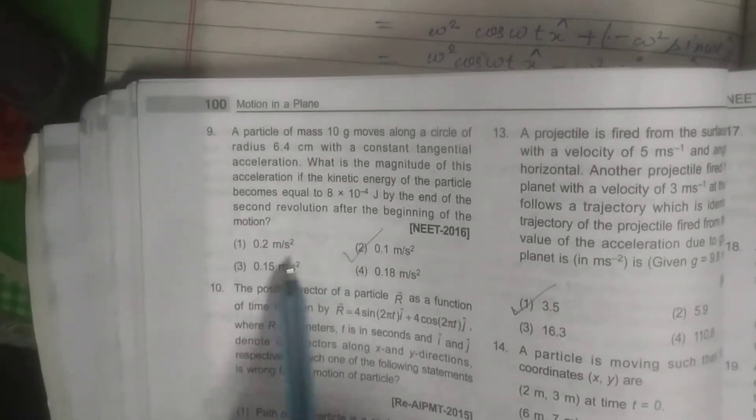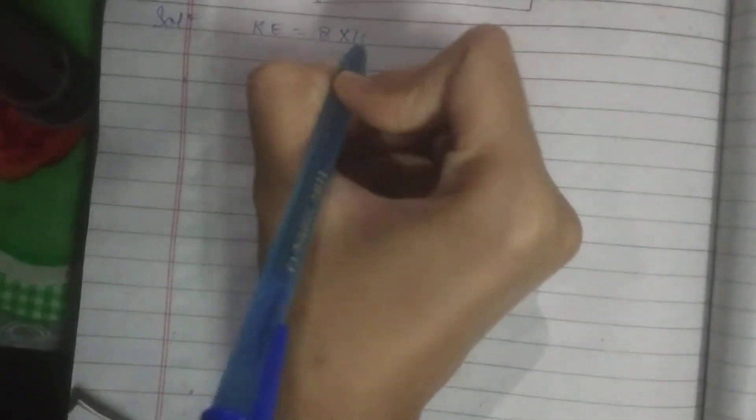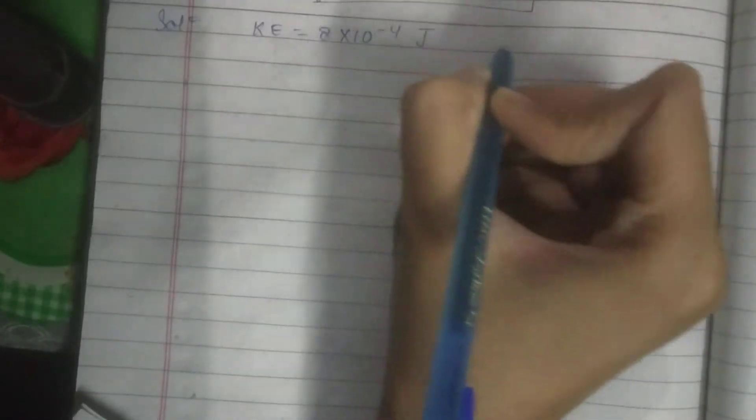So here are the four options. Now we will solve the question. So from the question, we are getting the information that the kinetic energy became 8 multiplied by 10 to the power minus 4 Joule.